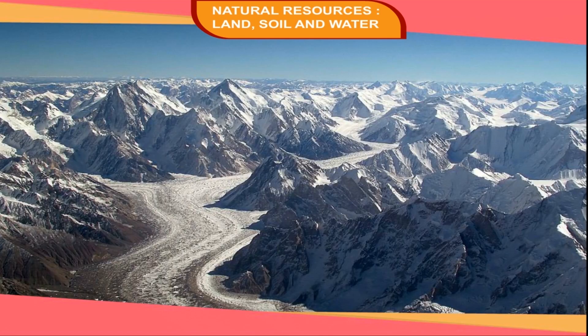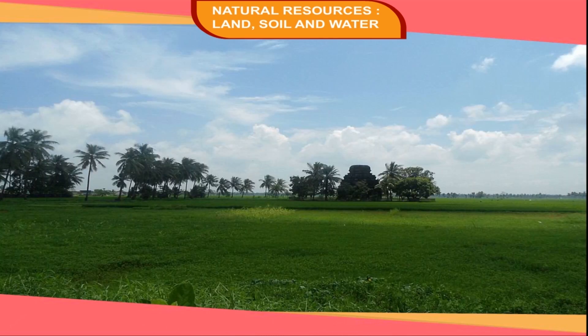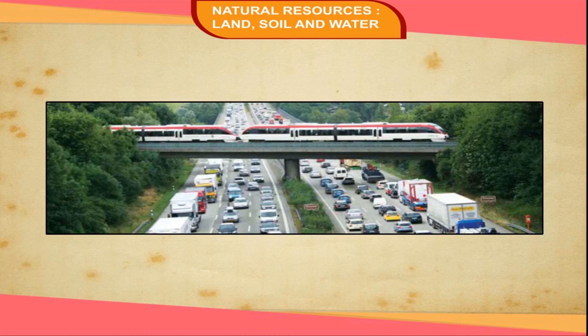The Karakoram mountain ranges, with the world's second highest mountain peak Mount K2, is located north of the Himalayas. There is a vast stretch of flat surface called the Northern Plains or Great Indian Plains. These plains are formed by the alluvium brought by the rivers flowing from the Himalayas. The plains have rich fertile soil and agriculture is highly developed here. They provide a good network of roads and railways and support more than half of the Indian population.